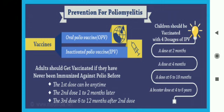To prevent poliomyelitis, two vaccines are available: oral polio vaccine (OPV) and inactivated polio vaccine (IPV). Adults who have never been immunized should receive three doses: the first dose at any time, the second one to two months later, and the third six to twelve months after the second. Children should be vaccinated with four doses of IPV: at two months, four months, six to eighteen months, and a booster dose at four to six years.